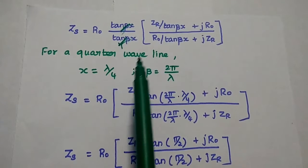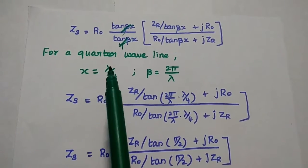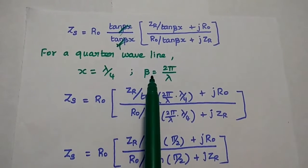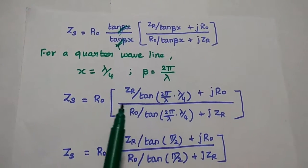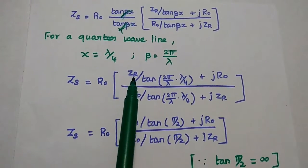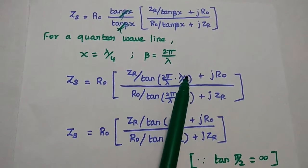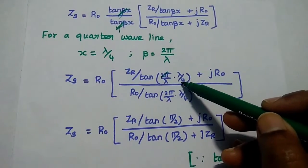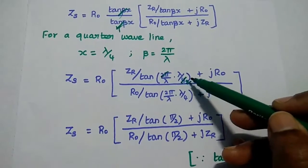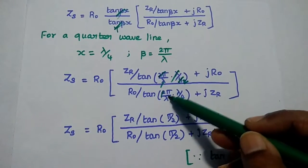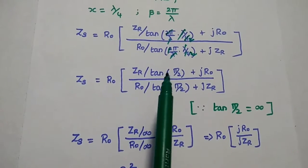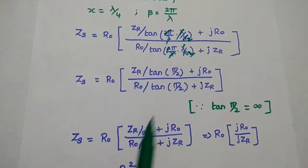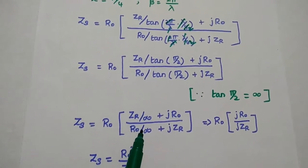Here we consider a quarter wave line, so x equals lambda by 4, and βx equals 2π by lambda. Substituting these values into tan(βx), we get ZR divided by tan(2π/λ × λ/4), which simplifies to tan(π/2). Since tan(π/2) equals infinity, anything divided by infinity becomes zero. So both tan terms become zero.